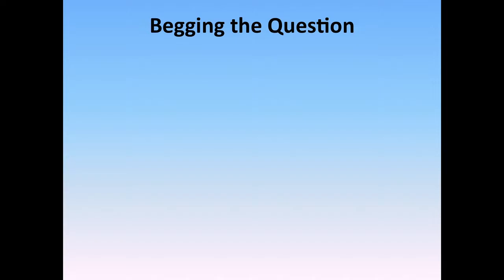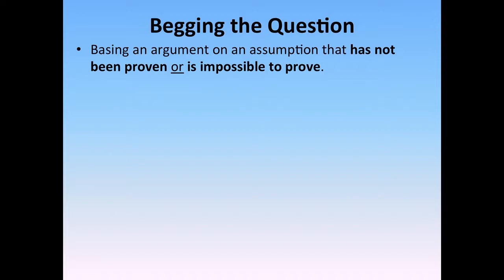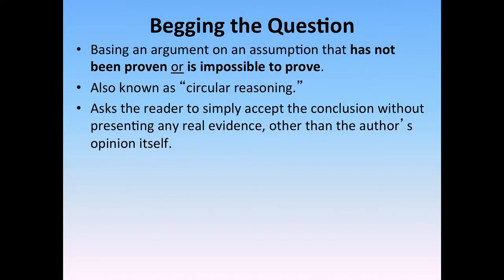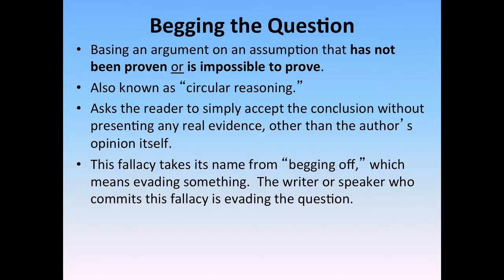The next fallacy is the begging the question fallacy, which basically bases an argument on an assumption that has not been proven or is impossible to prove. It's also known as circular reasoning. Begging the question is where an argument asks the reader to simply accept the conclusion without presenting any real evidence other than the author's opinion itself. It acts like something has been proven and bases the argument on that, when in reality it has not been proven or cannot be proven. The name comes from the expression 'to beg off,' meaning to evade or avoid something — so the speaker is evading the question.